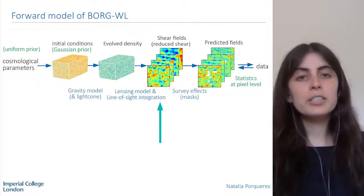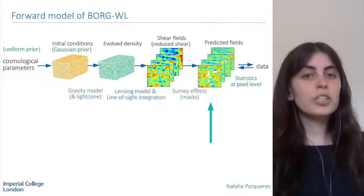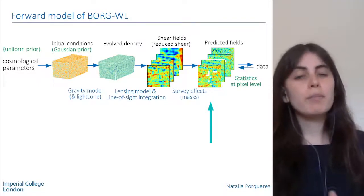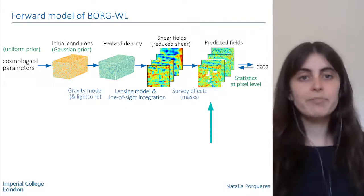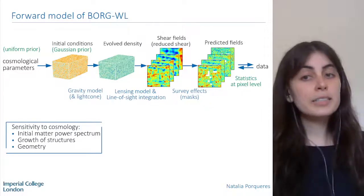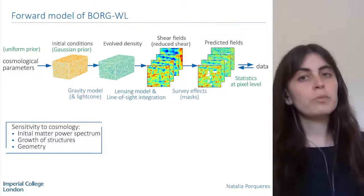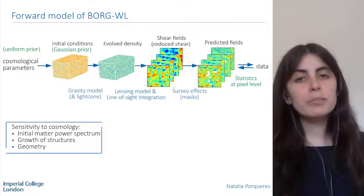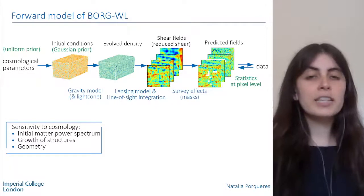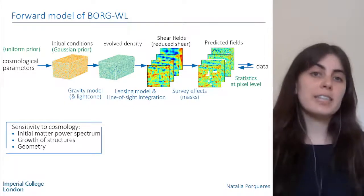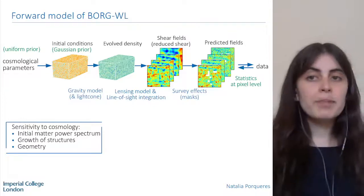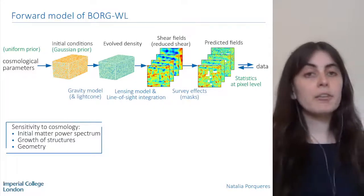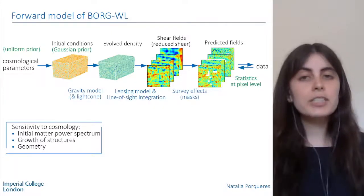The last step is to add survey effects, such as accounting for unobserved regions and bright stars that block light from distant galaxies. This is very easy to do with a field-based approach — a masked pixel simply receives an infinite variance. With this forward model, sensitivity to cosmology is threefold: through the initial matter power spectrum that determines the initial conditions, through the growth of structures encoded in the gravity model, and through the geometry, since every change in cosmology affects the line-of-sight integral, the shear fields, and the redshift of the box. All these quantities are updated consistently throughout the forward model — this is the first time this is done within the Borg framework.